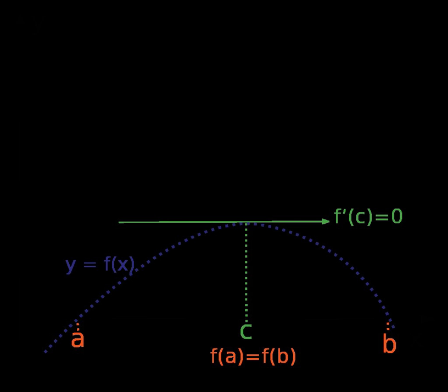If the right and left hand limits agree for every x, then they agree in particular for c, hence the derivative of f exists at c and is equal to 0.